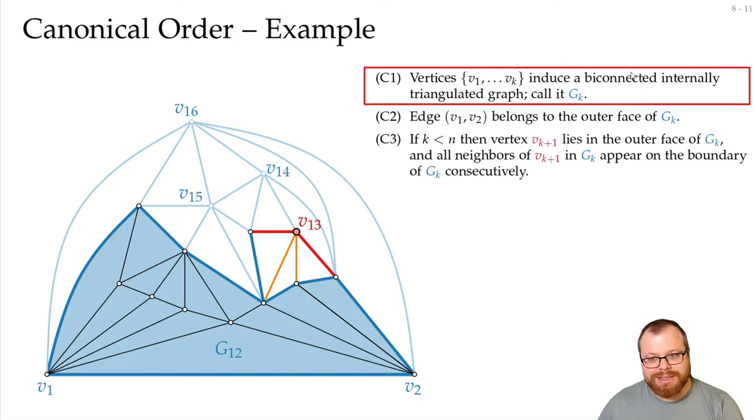And it's clear that it is not biconnected because this here is a cut vertex. If we remove this, then this vertex here has no neighbor, it's its own isolated component in G12, so it's not a biconnected graph.